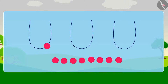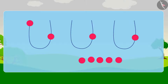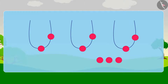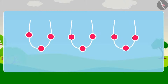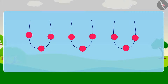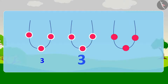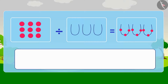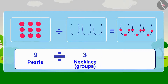First we will put 1 pearl in each necklace. Now we have 6 pearls left. Now we will put 1 more pearl in each necklace. Now we have 3 pearls left. Finally, we will put 1 last pearl in each necklace. Appu has no pearls left and his 3 necklaces are ready. Each necklace has 3 pearls. In other words, Appu's 9 pearls were divided into 3 equal groups and each group had 3 pearls.